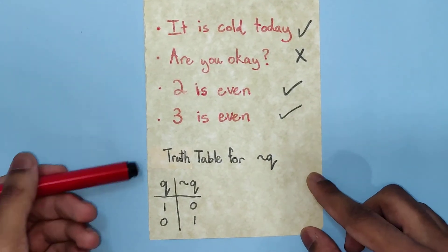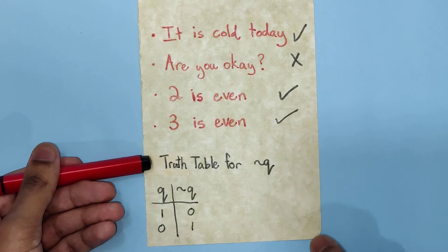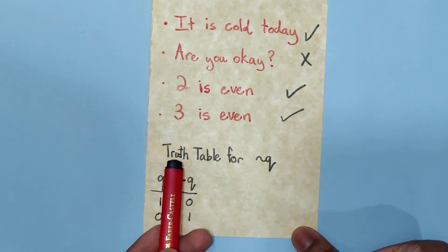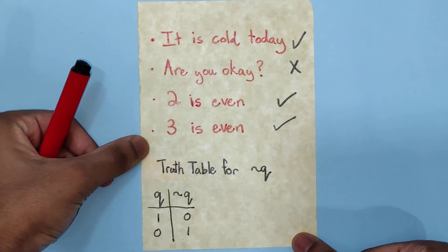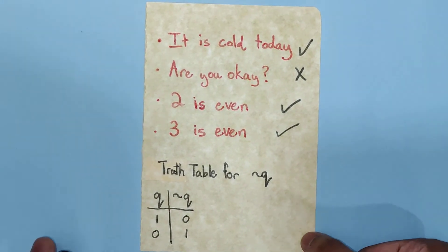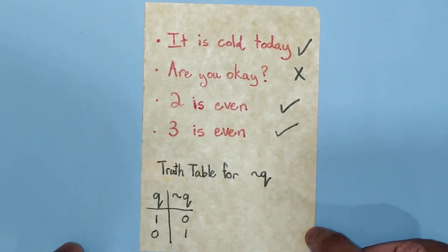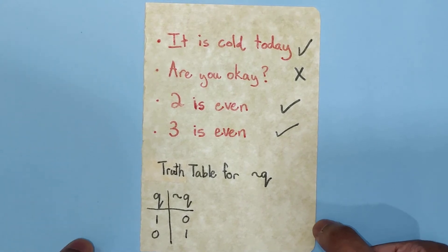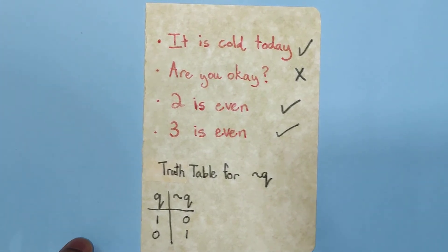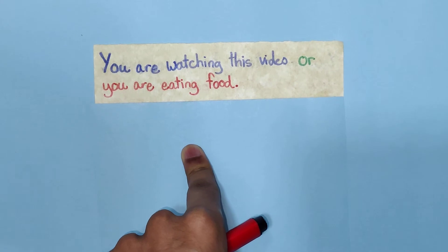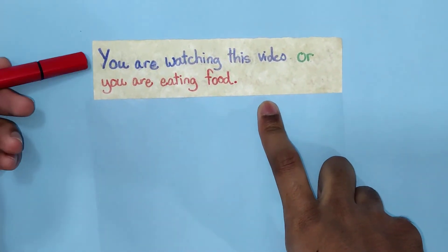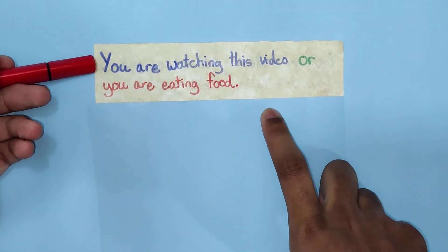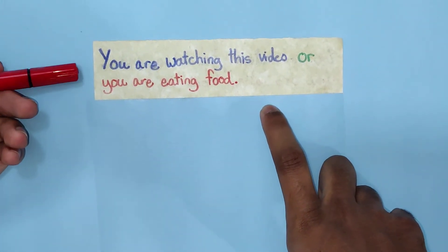Down here we have something called a truth table. This would be read as 'truth table for not Q.' A truth table in logic is just something that allows us to easily determine whether or not a proposition is true. So what happens if propositions are linked? How can propositions be linked? In this here, we have two propositions making up a compound proposition.